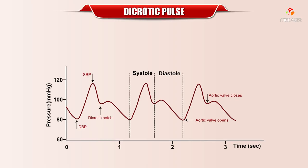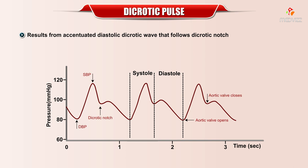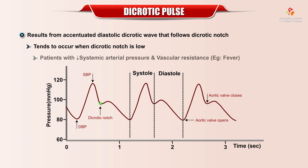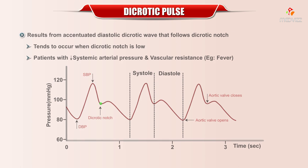Dicrotic pulse. A dicrotic pulse results from the accentuated diastolic dicrotic wave that follows the dicrotic notch. It tends to occur when the dicrotic notch is low, as seen in patients with decreased systemic arterial pressure and vascular resistance.